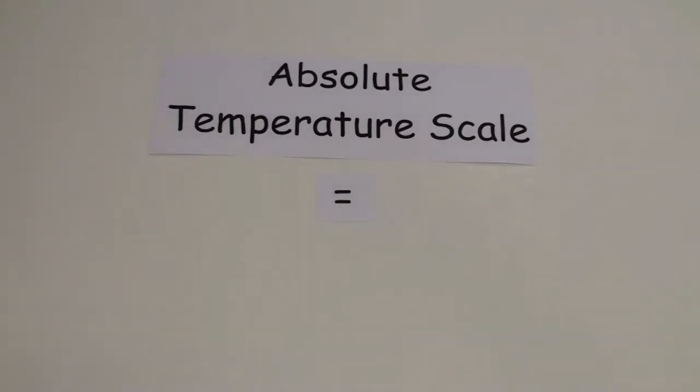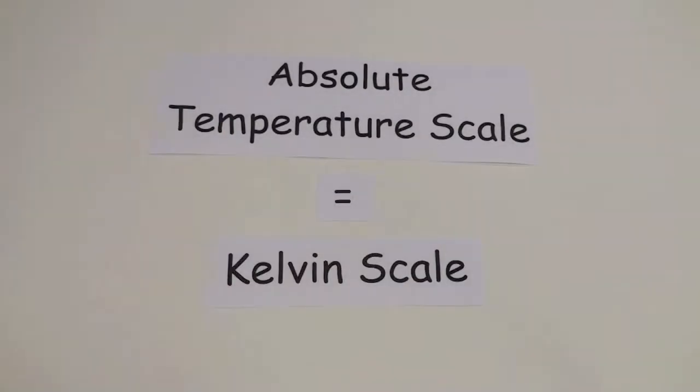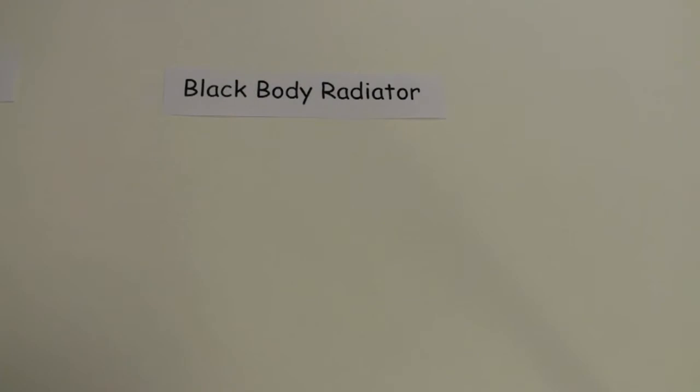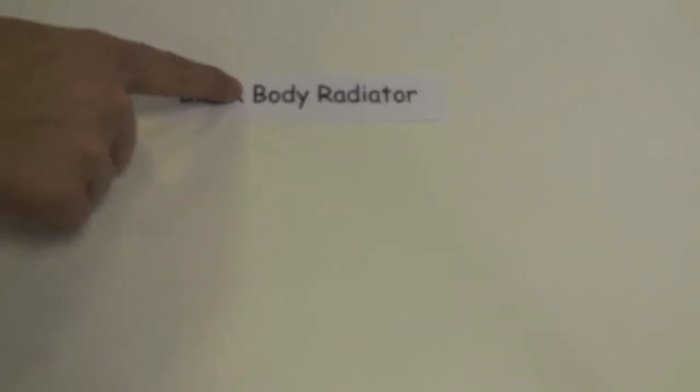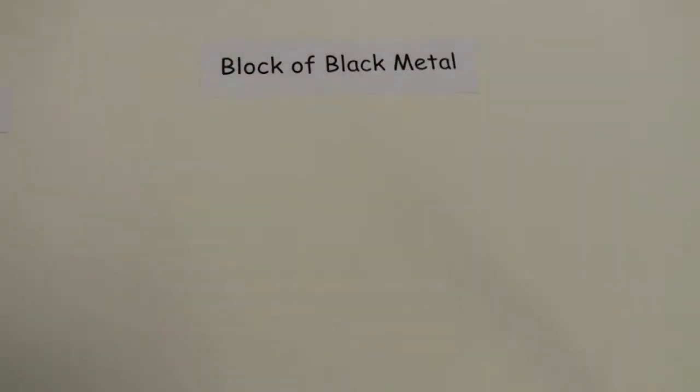The absolute temperature scale is also the Kelvin scale. To start off, we need to understand the theoretical black body radiator. For example, we'll use a block of black metal.